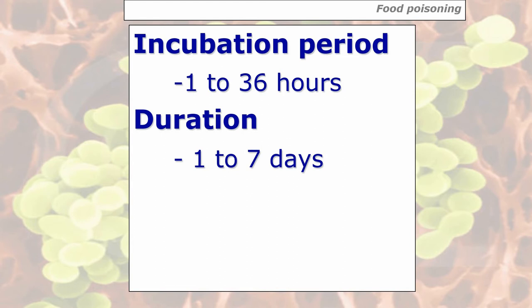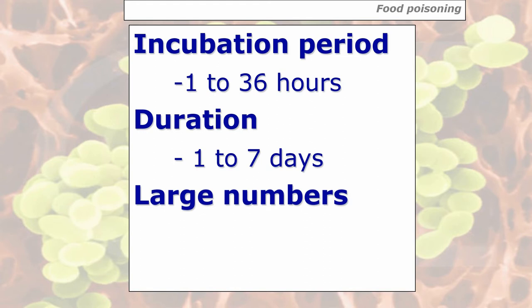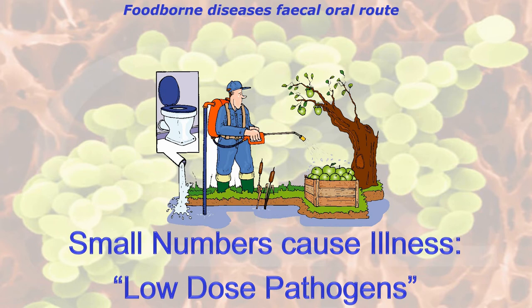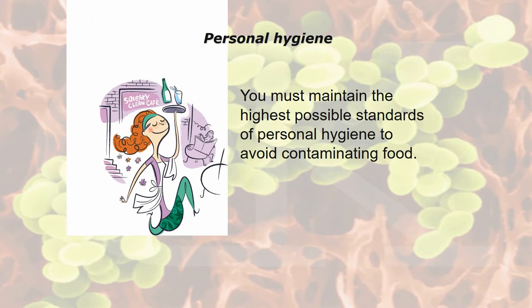Duration of food poisoning — another likely exam question — is anything between 1 and 7 days. Food poisoning generally requires large numbers of bacteria to cause illness. Foodborne diseases, by contrast, enter our system via the faecal-oral route, where bacteria are already present in water or on food, and these are where small numbers cause illness. They're called low dose pathogens.